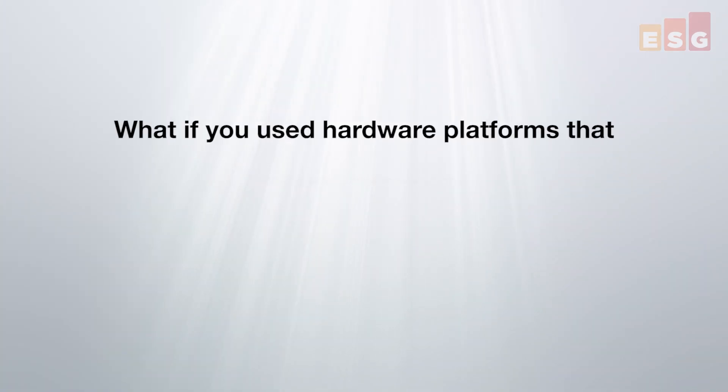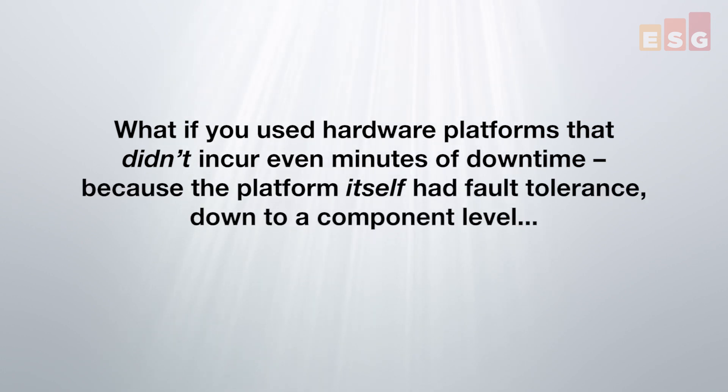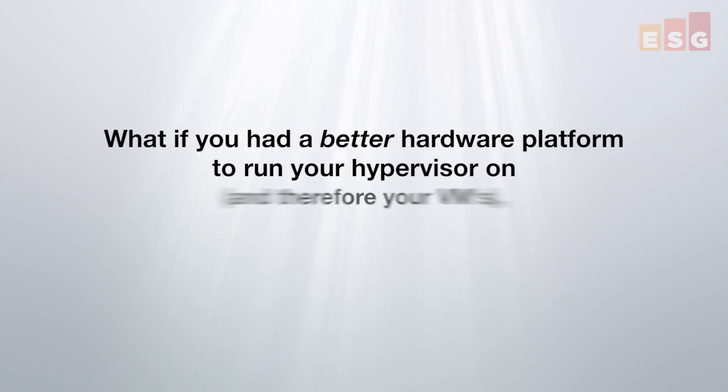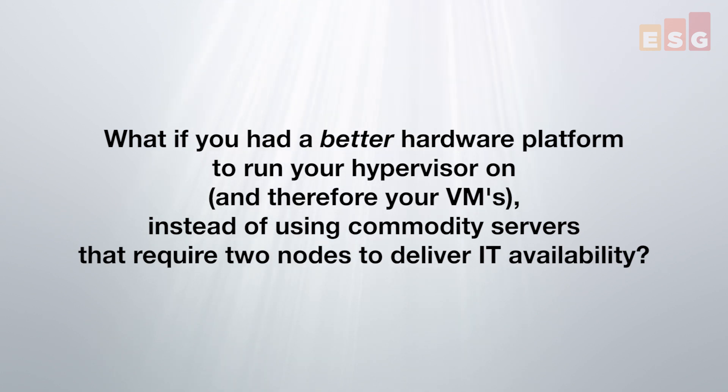In this case, one is restarting a near-current clone of a VM somewhere else, experiencing the variabilities associated with that action. What if you used hardware platforms that didn't incur even minutes of downtime because the platform itself had fault tolerance down to a component level built in? You could still run Windows Server, VMs, hypervisors, or whatever. What if you simply had a better hardware platform to run your hypervisor — and therefore your important VMs — instead of commodity servers requiring two nodes to deliver IT availability? This is what Stratus offers with its FT solution. Don't change your hypervisor, because VMware doesn't know it's running on a better hardware platform than commodity servers. Don't change how you manage your VMs. Most of your VMs can and likely do run on generic hosts, but the really important VMs should run on natively fault-tolerant hosts instead.